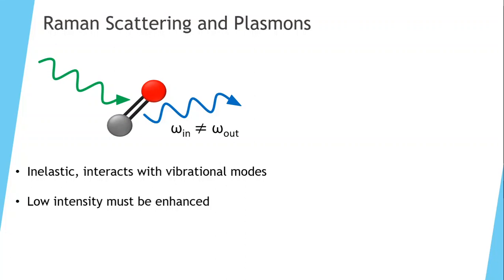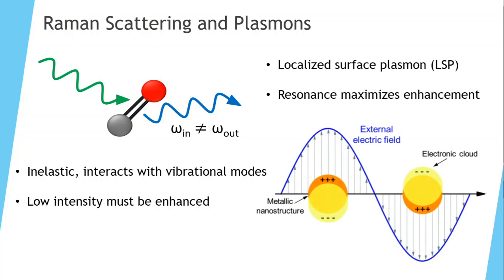However, the Raman spectra is at a low intensity and must be enhanced in order for it to be applicable. This can be done through the use of localized surface plasmons. These are collective oscillations of electrons in a noble metal cluster, specifically one that is smaller than the wavelength of incident light, and we can maximize this enhancement through certain resonance frequencies.